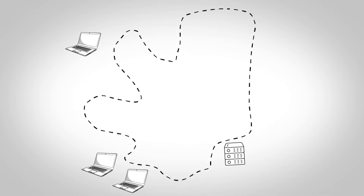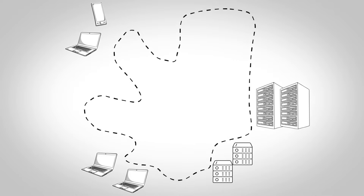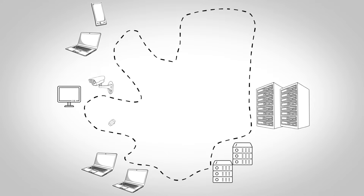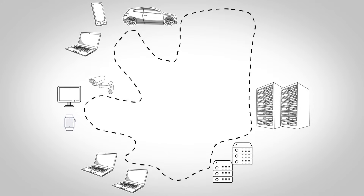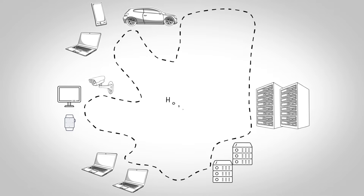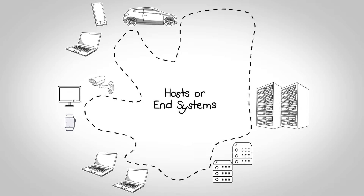At the edge of the internet, we have devices which we use to connect to the internet. For example, personal computers, servers, data centers, smartphones, security cameras, smart TVs, smart watches, or vehicles. We call these devices as hosts or end systems. So end systems are present at the edge of the internet.